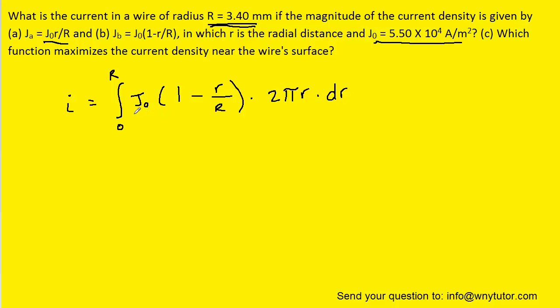Now to integrate this we can remove the constant factors. So we can take out the J0 as well as the 2π. Perhaps we could then distribute lowercase r. We can then go ahead and integrate r, which will become r to the power of 2 over 2.